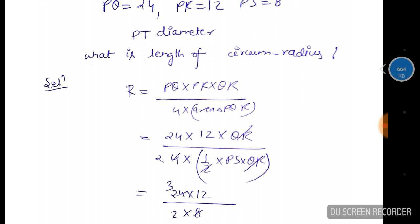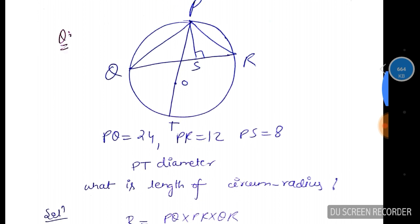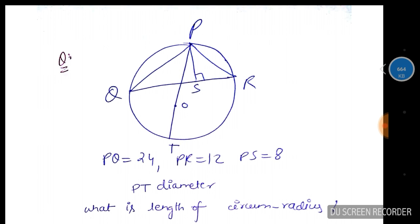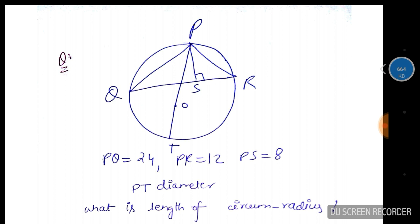So PQ into PR into QR, product of all sides upon 4 into area of PQR. If you see the PQR triangle, the circum-radius means that the circle is outside the triangle. The formula for circum-radius is product of all sides ABC upon 4 area.